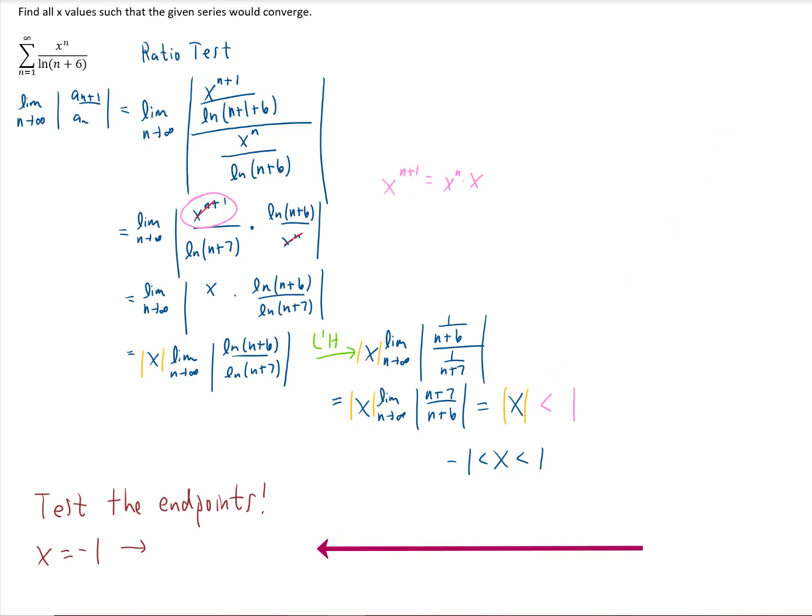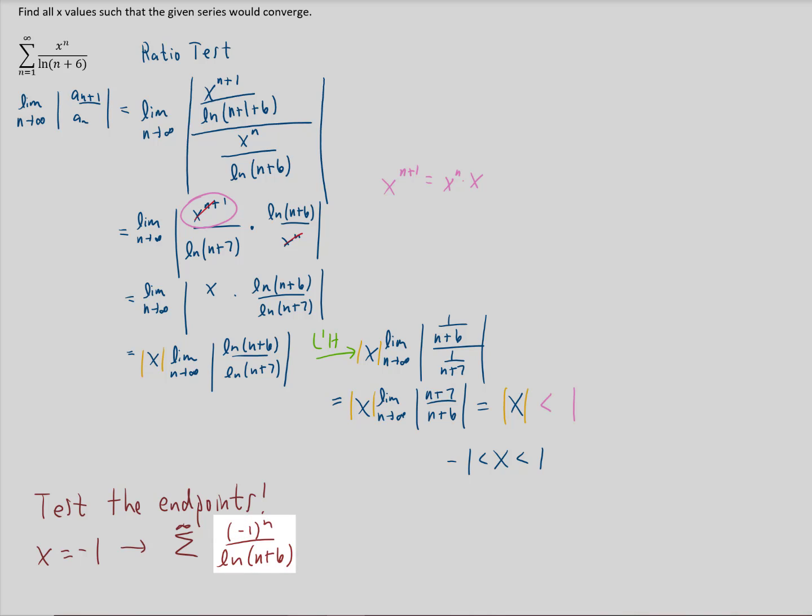Okay, so when x equals negative one, our series looks like this. Notice that this series is an alternating series because it has this negative one to the n term in it. Also notice that this natural log of n plus six is going to go to infinity as n goes to infinity, so that this term inside of this alternating series is going to zero. That means that this series is going to converge when x equals negative one, and what we're going to do is go back to our interval of convergence and add an equal sign in right here.